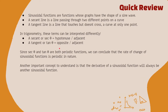Sinusoidal functions are those functions whose graphs have the shape of a sine wave — it just goes up and then down, a nice little wave. A secant line is a line that passes through two different points on a curve, and a tangent line is a line that touches but doesn't cross a curve at only one point — it will touch the graph and never cross it anywhere else.